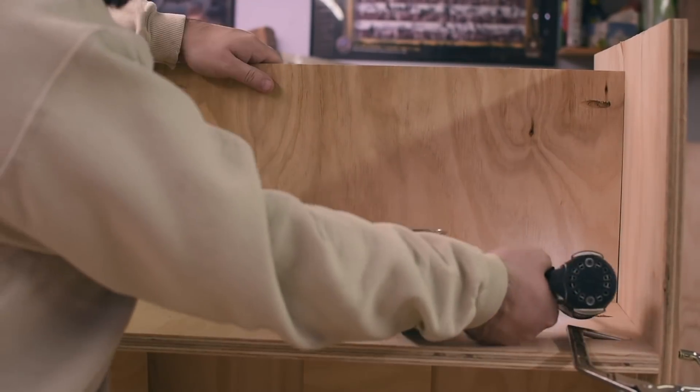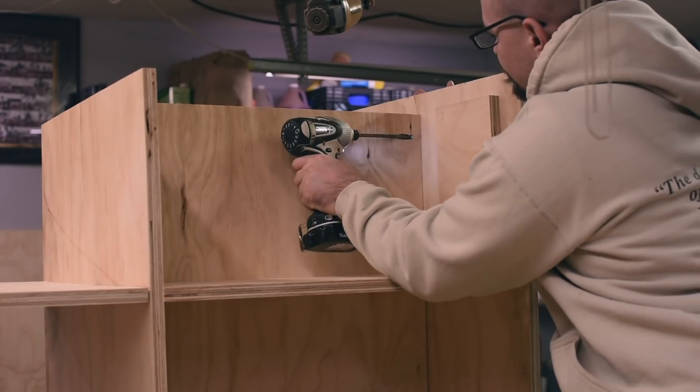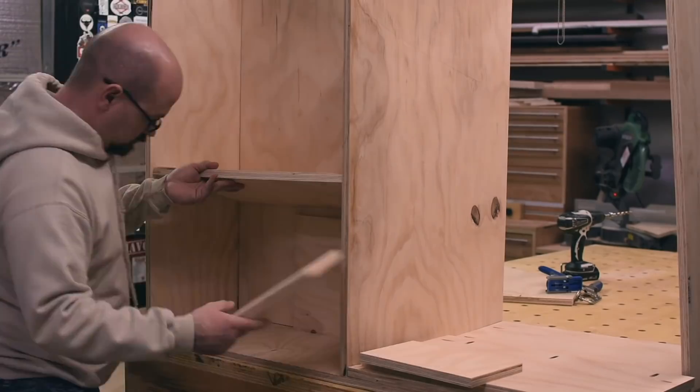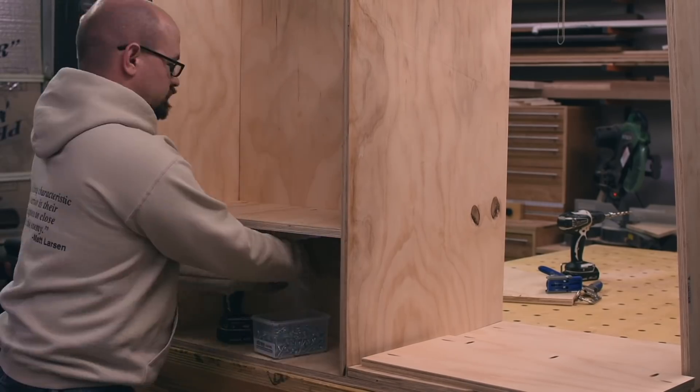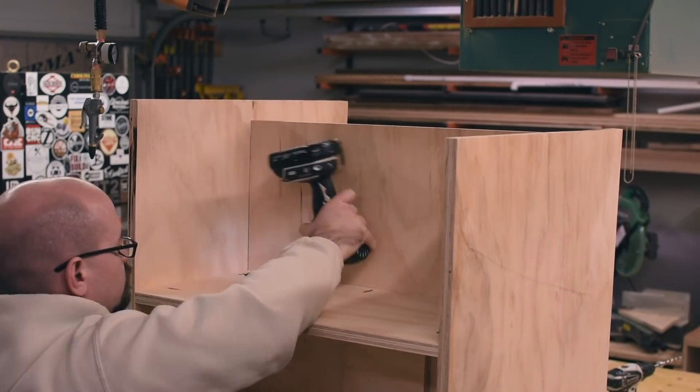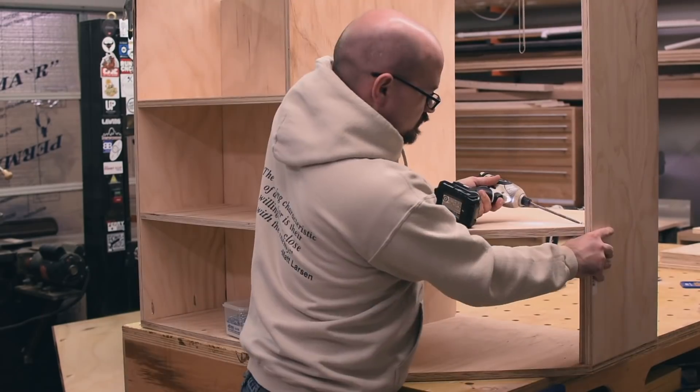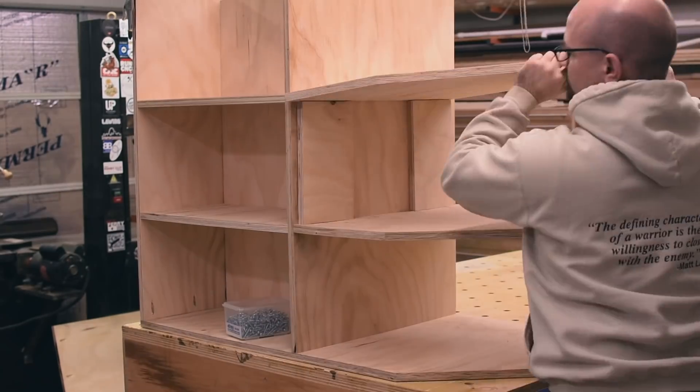You'll notice that the middle supports are shorter than the sides. This is so the bottom will be raised off the floor and only the sides will be on the floor. That'll help keep everything stable because if the entire bottom was on the floor and the floor was uneven at all, then the shelves would be really rocky.